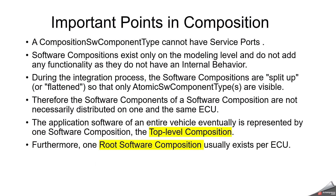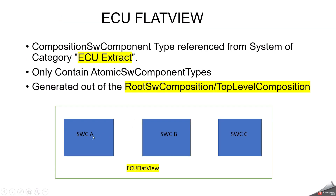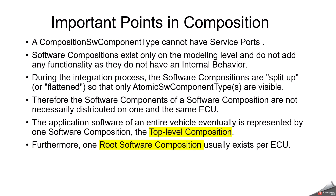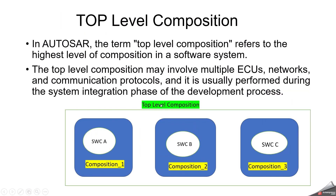The important points about composition: the composition software component type cannot have service ports. Software compositions exist only on the modeling level and do not add any functionality, as they do not have any internal behavior. During the integration process, software compositions are split or flattened — during flattening, only the software component types are visible. Also, the software components of a software composition are not necessarily distributed on one and the same ECU. The application software of an entire vehicle is eventually represented by one software composition called the top level composition, and one root software composition usually exists per ECU.